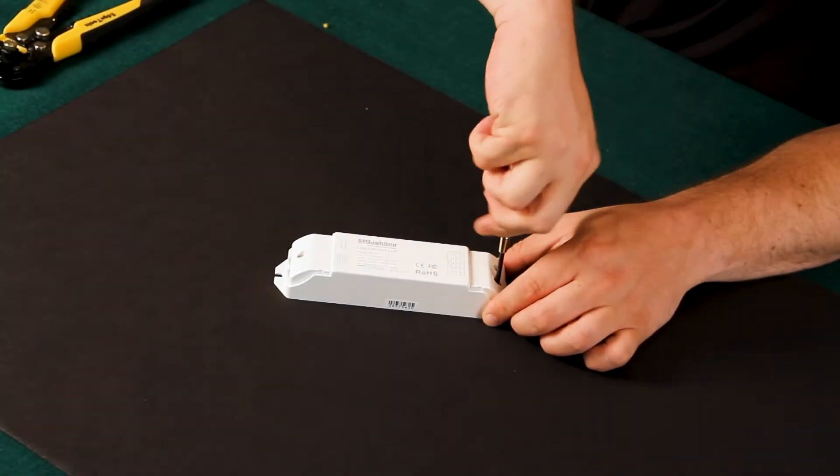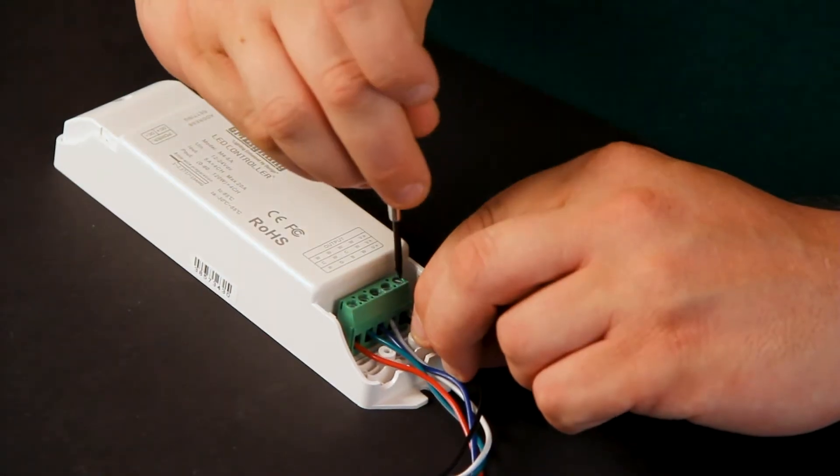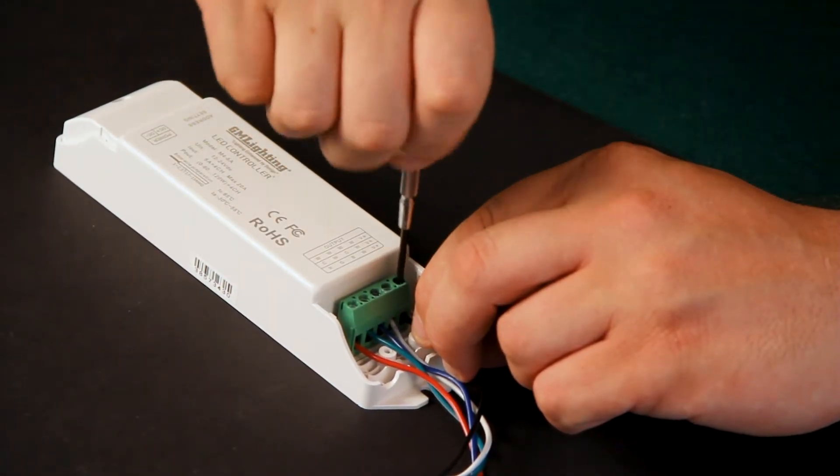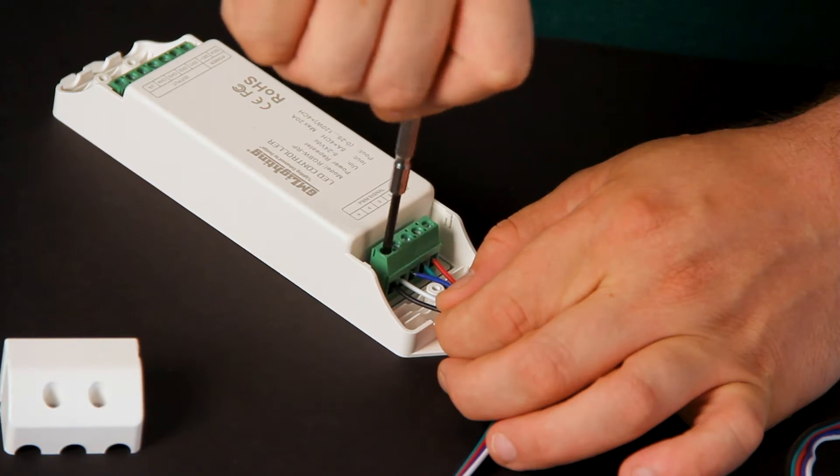Attach the main LED controller to the beginning of your RGBW tape run. You can hook up multiple runs to the same controller as long as you don't exceed the maximum wattage. Before you reach that magic number, introduce a repeater into your layout. This will enable another 300 watts.